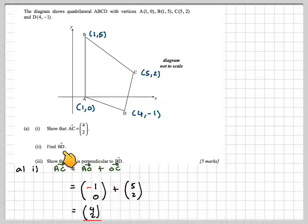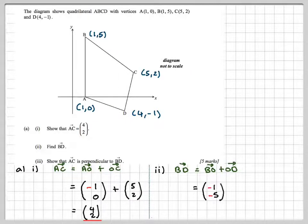Then we now apply that to find BD. BD is this vector here, so to do that I'm going to have to go BO plus OD. It's always a good idea to write this out first. BO is going against the coordinates of that one, so it's minus (1,5), plus OD, which is with the coordinates (4,-1). -1 + 4 is 3, and -5 + -1 is -6.